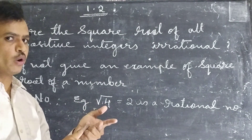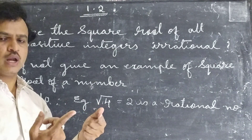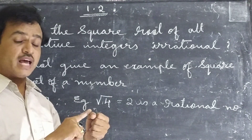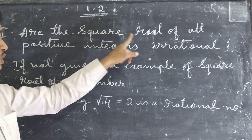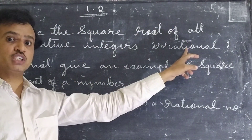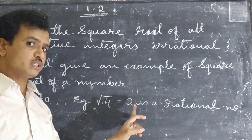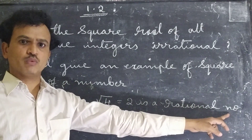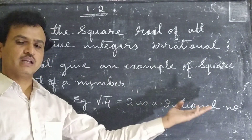Square root 2, square root 3 — okay. But square root 4, what is the answer? 2. Then square root 5, 6, 7, 8, and square root of 9, the answer is 3. So are the square roots of all positive integers irrational? No. All positive integers are not irrational. The answer is no. For example, square root of 4 equals 2, which is a rational number. One more example: square root of 9 equals 3, which is also a rational number.